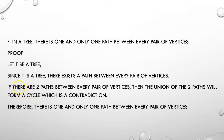In a tree there is one and only one path between every pair of vertices. To prove this: let T be a tree. Since T is a tree, there exists a path between every pair of vertices. If there are two paths between every pair of vertices, then the union of the two paths will form a cycle, which is a contradiction because a tree cannot have a cycle. Hence we have proved that there is one and only one path between every pair of vertices.